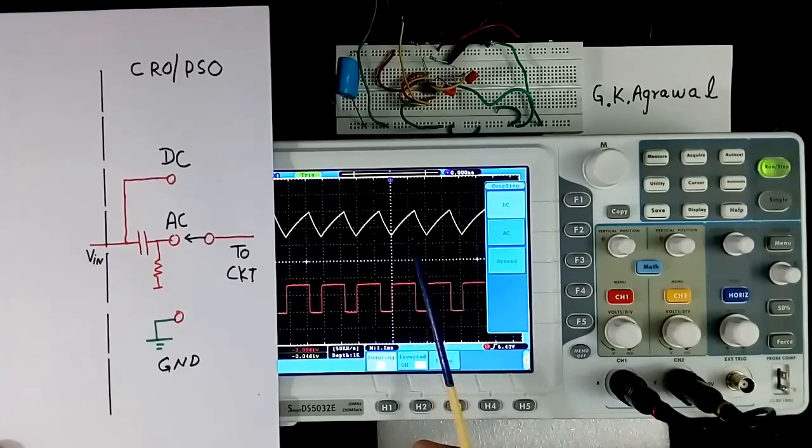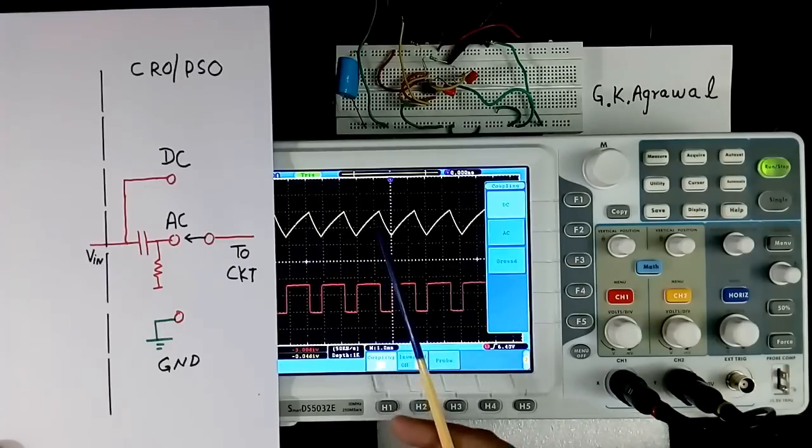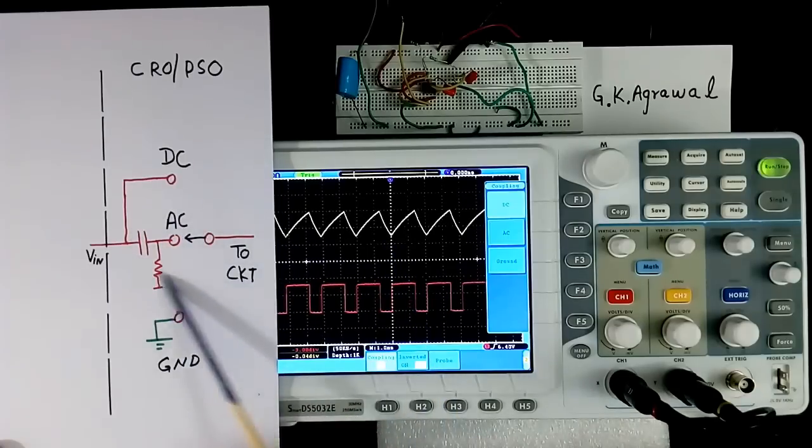This is useful. Suppose you have small AC signal and more DC. Then you will not be able to see AC signal. That time we use AC.